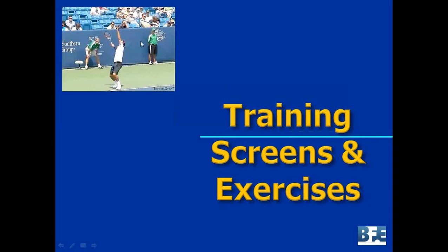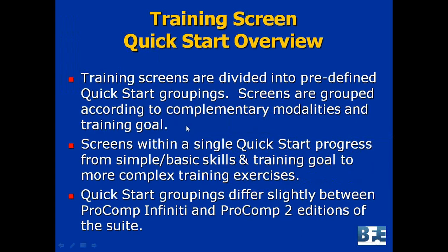In the corner is a still photo of one of the animations — the whole training screens for the tennis suite come with tennis-themed videos and animations to run with the training activities. These training screens are divided into predefined quick start groupings selected from the quick start menu, just like for starting the assessment. The screens have been placed into groups automatically, grouped according to complementary modalities and training goals. For example, the respiration and heart rate sensors are put in similar training screens because you usually use them together, with similar training goals: slow down the breathing and bring up the heart rate variability.